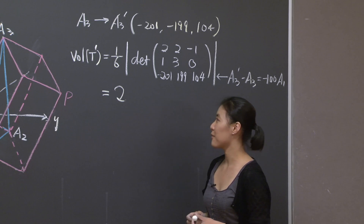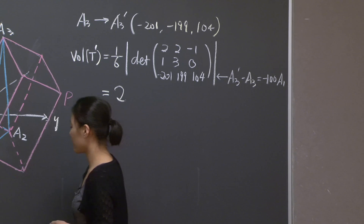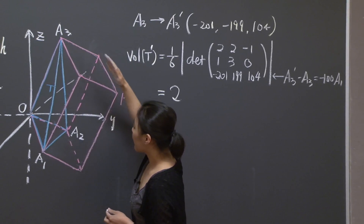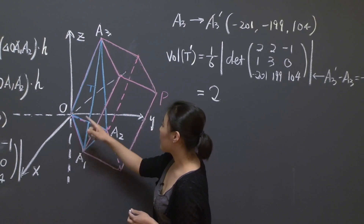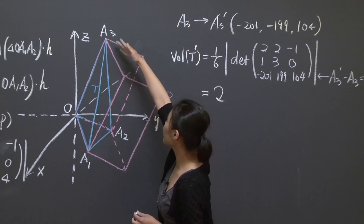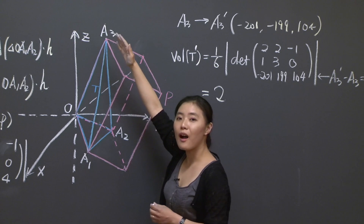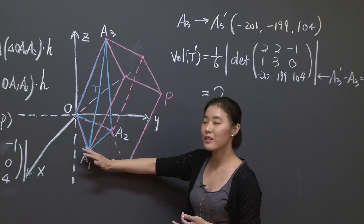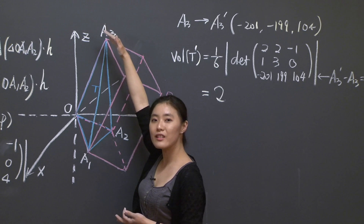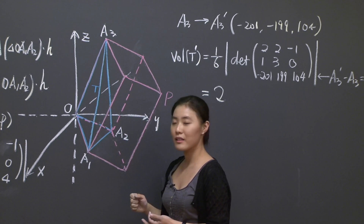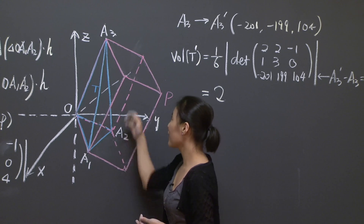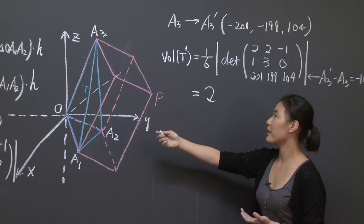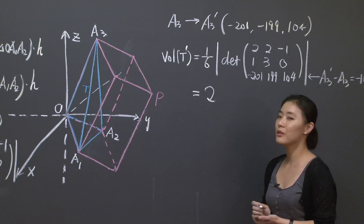From the geometric picture, this means we're moving A3 in the direction of A1 by 100 times — parallel to A1. Since A1 lies in the base plane, moving A3 parallel to the base doesn't change the height H. Since A1 and A2 are fixed, the base is fixed and the height is unchanged, so of course the volume doesn't change. That's another way to see that the volume of T' equals the volume of T.